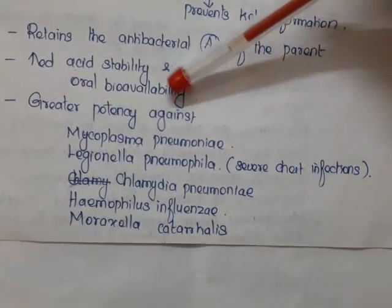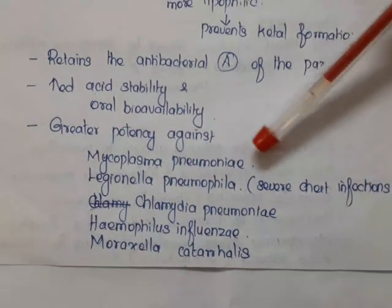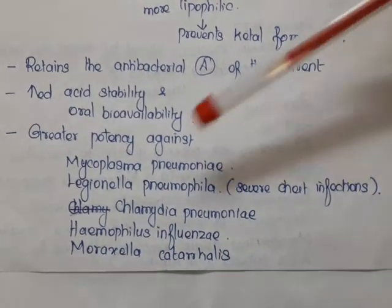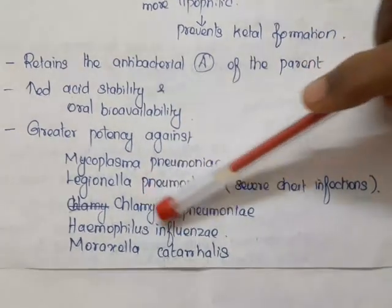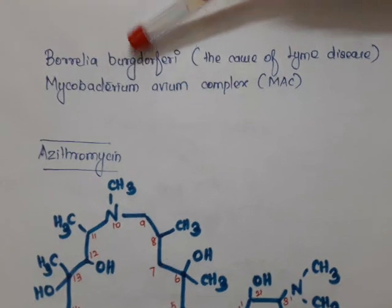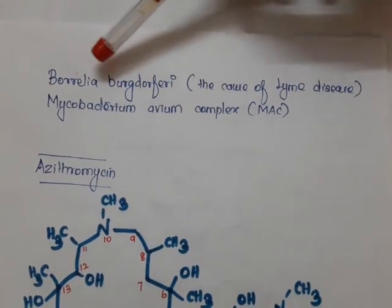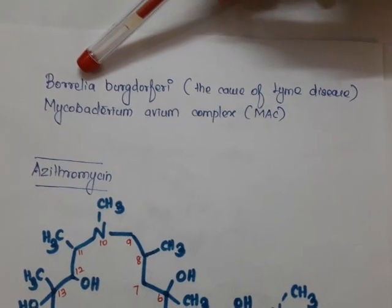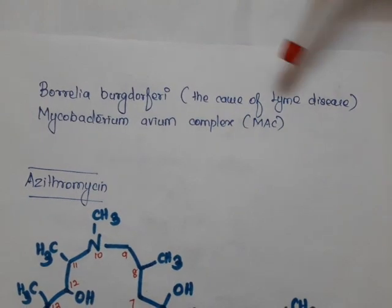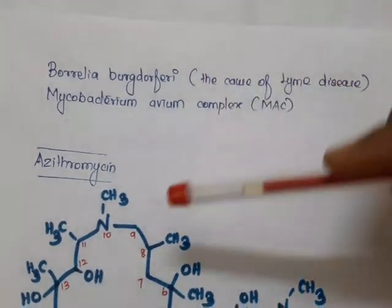Clarithromycin has greater potency against Mycoplasma pneumoniae, Legionella pneumophila (responsible for severe chest infections), Chlamydia pneumoniae, Haemophilus influenzae, and Moraxella catarrhalis. It is also active against unusual pathogens such as Borrelia burgdorferi, the cause of Lyme disease, and Mycobacterium avium complex.